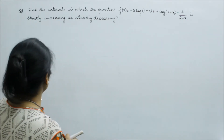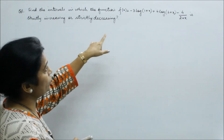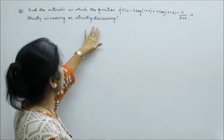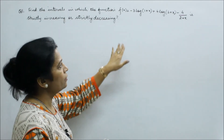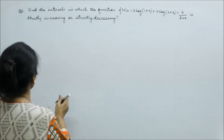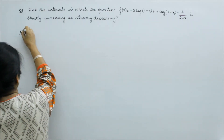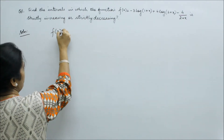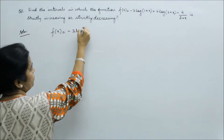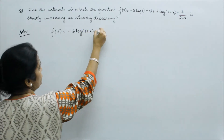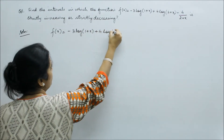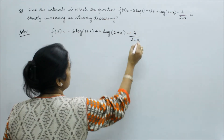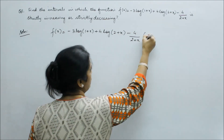Find the intervals in which the function is strictly increasing or strictly decreasing. The question involves a log function: f(x) = 4·log(2+x) − 4/(2+x). This is the given curve.